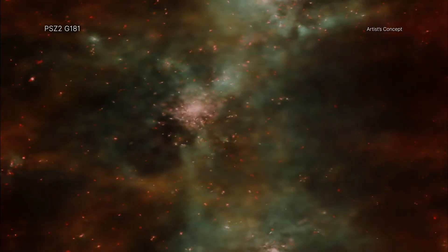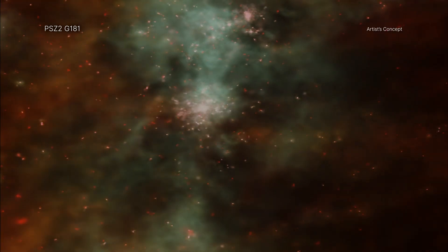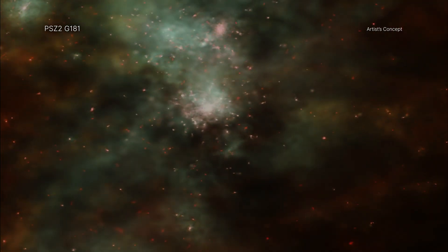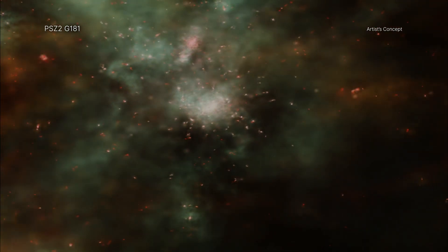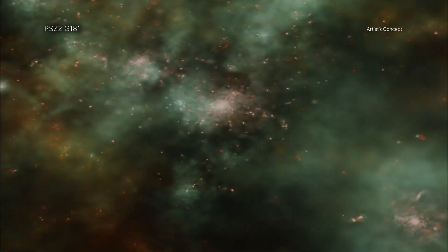Galaxy clusters are some of the largest structures in the universe. Held together by gravity, they are monster-sized collections of hundreds or thousands of individual galaxies, massive amounts of superheated gas, and invisible dark matter.